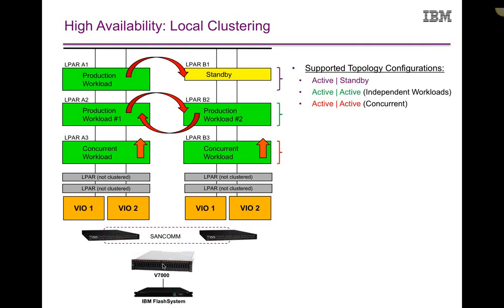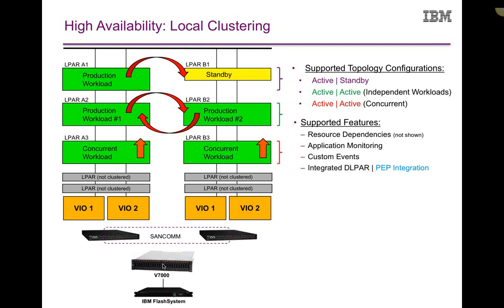You can think of active-active as a scenario where two different instances on both sides of the cluster are providing protection for a specific workload, so it doesn't necessarily have to be truly concurrent. I often have to clarify what 'active-active' means — do you mean concurrent where you're hitting the same workload from all sides at the same time, or do you mean both sides are doing something? Keep that in consideration when doing your planning.